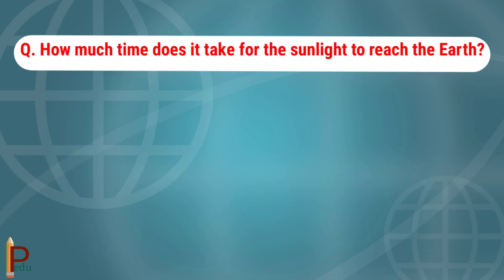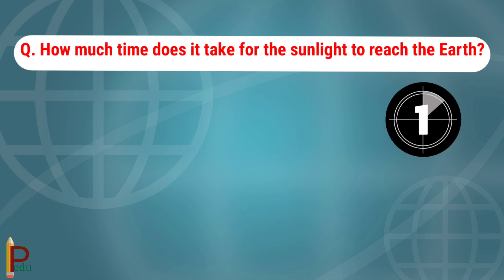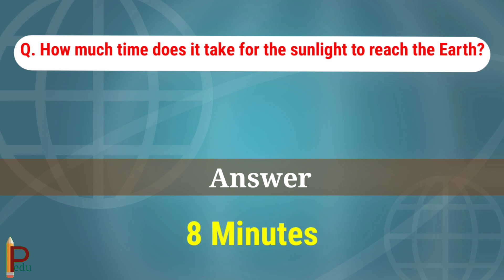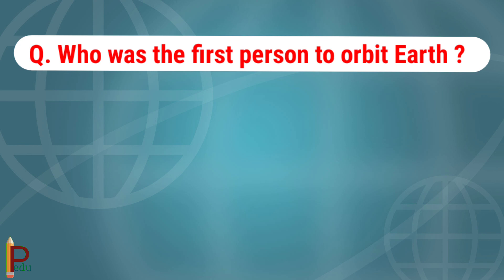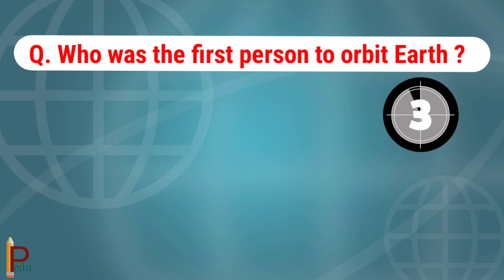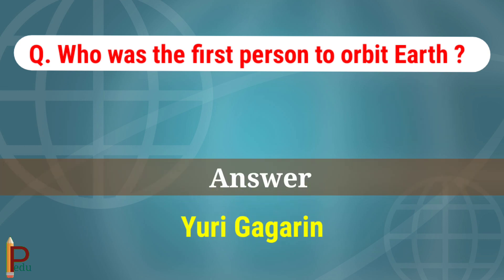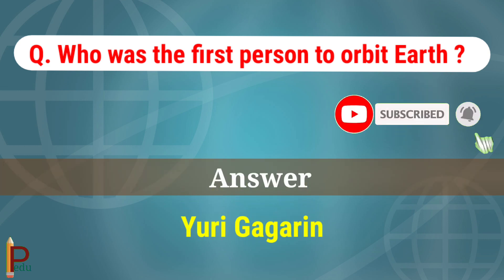How much time does it take for sunlight to reach the Earth? The answer is eight minutes. Who was the first person to orbit the Earth? The answer is Yuri Gagarin.